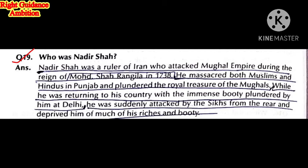The next question: who was Nadir Shah? Nadir Shah was a ruler of Iran who attacked the Mughal Empire during the reign of Muhammad Shah Rangila in 1738. He massacred Muslims and Hindus in Punjab and took the royal treasure of the Mughals. While he was returning to Iran with the immense booty plundered at Delhi, he was attacked from the rear by the Sikhs, who deprived him of much of his riches.